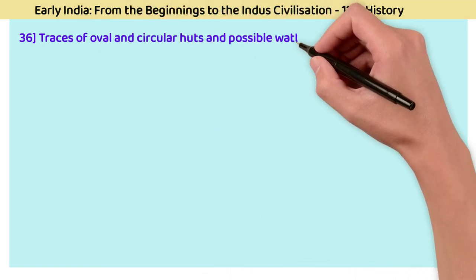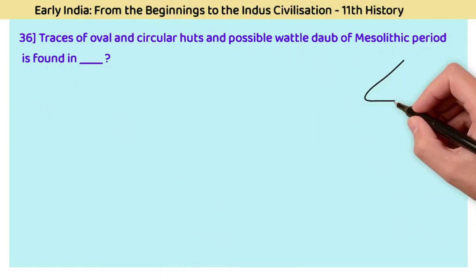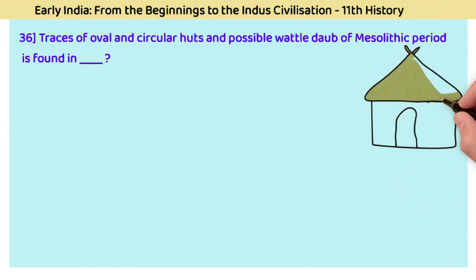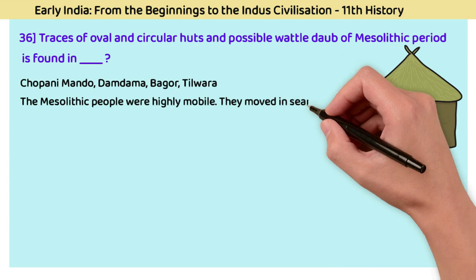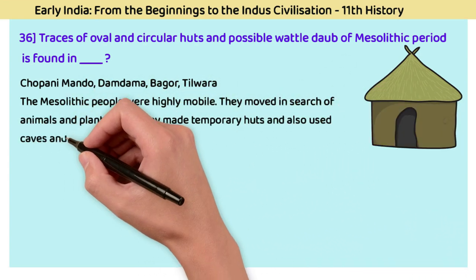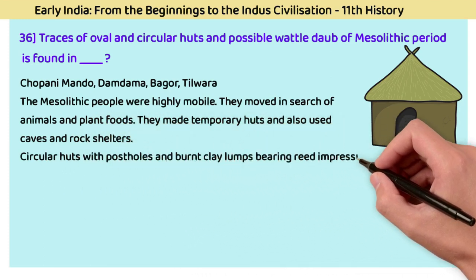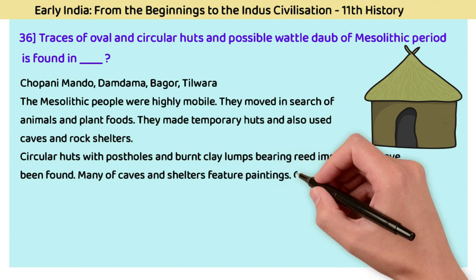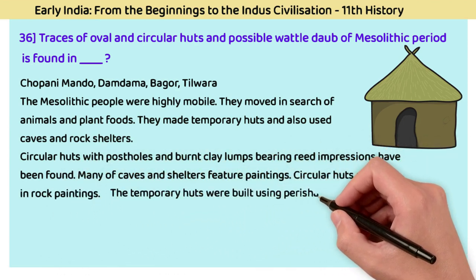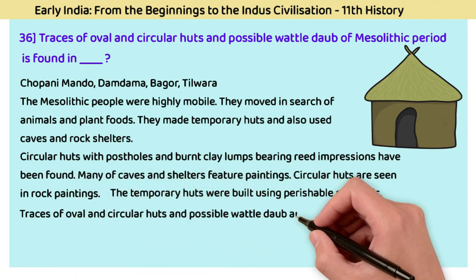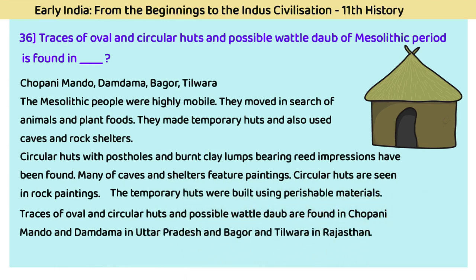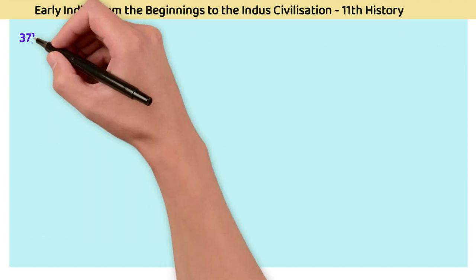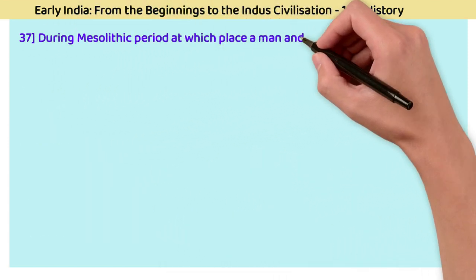Question 36: Traces of oval and circular huts and possible wattle-and-daub of the Mesolithic period are found in? The answer is Chopani Mando, Damdama, Bagor, and Tilwara. Mesolithic people were highly mobile, moving in search of animals and plant foods, and made temporary huts while also using caves and rock shelters. Circular huts with post holes and burnt clay lumps bearing reed impressions have been found. Traces of oval and circular huts are found in Chopani Mando and Damdama in Uttar Pradesh, and Bagor and Tilwara in Rajasthan.